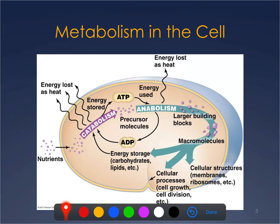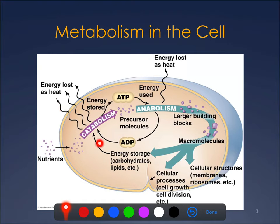Since no organism is perfect and biology is a sloppy thing, every time you do a chemical transformation — breaking things down or building things up — some of the energy is lost as heat. That means you're always going to have to be taking in energy from an outside source, whether that energy is in the form of chemicals because you're a chemotroph, or in the form of sunlight because you're a phototroph, or in some cases both.